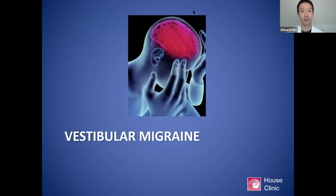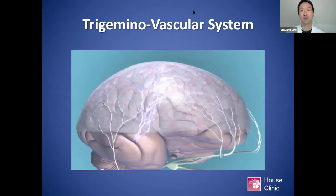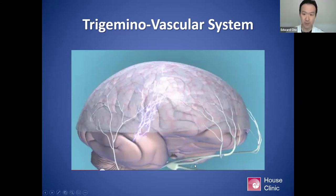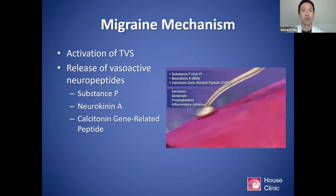Anytime you talk about vestibular migraine or migraines in general — including migraine headaches and optic migraine — you have to talk about the trigeminal vascular system, which starts with the trigeminal nucleus and all the nerve endings that provide sensation to various parts of the face and head. The underlying mechanism of general migraine is activation of this trigeminal vascular system — essentially neurovascular inflammation.